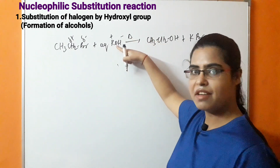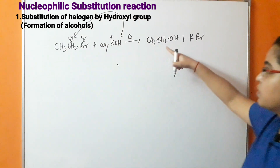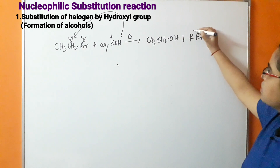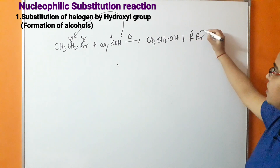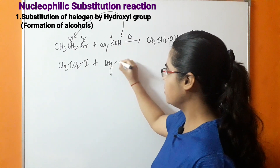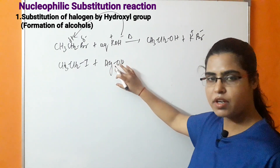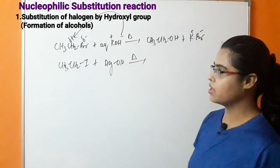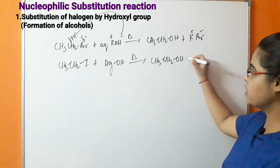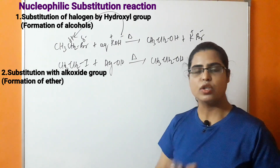The OH⁻ acts as a nucleophile and attacks the electron-deficient carbon of ethyl bromide, resulting in the formation of ethyl alcohol and removal of KBr as an ionic compound. We can also use silver hydroxide, which is formed by dissolving silver oxide in water. In the presence of silver hydroxide (an ionic compound), the reaction produces CH₃CH₂OH and AgI is removed.